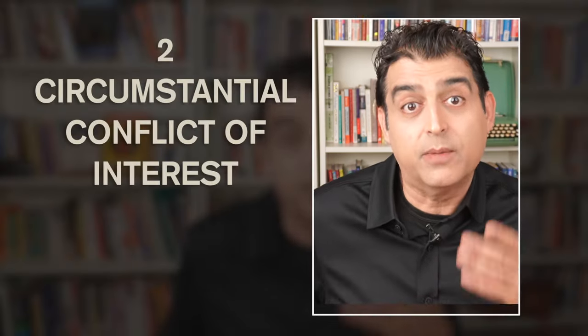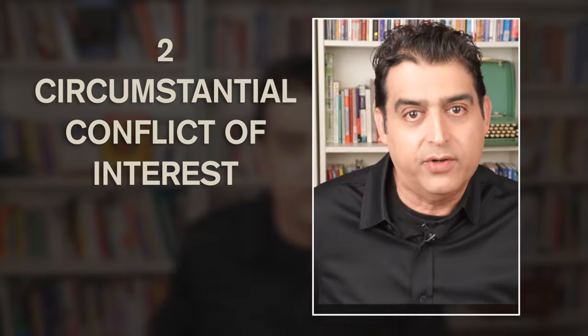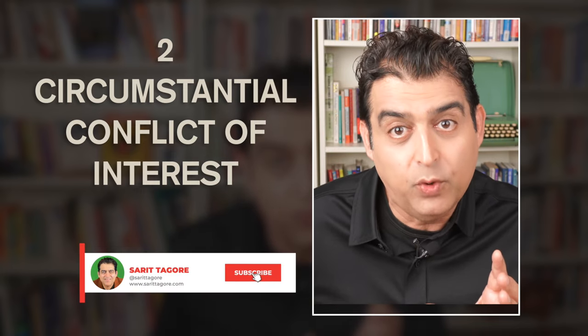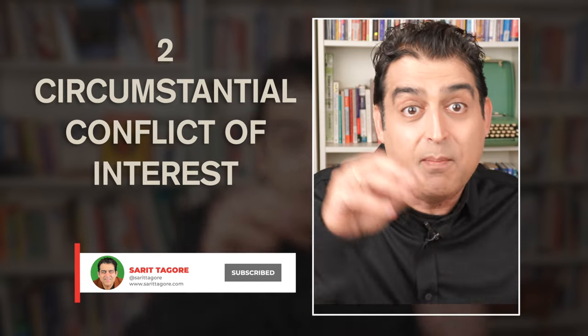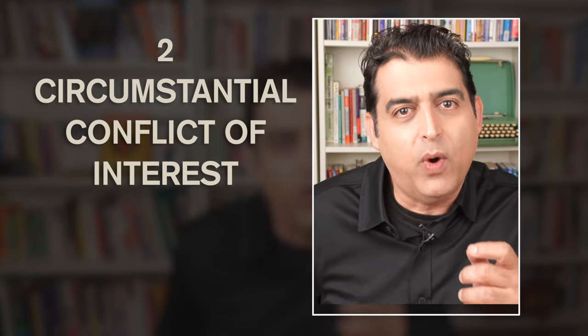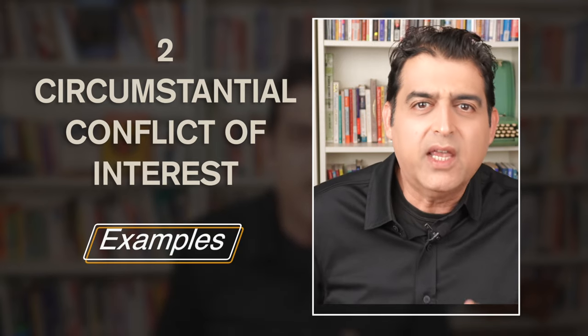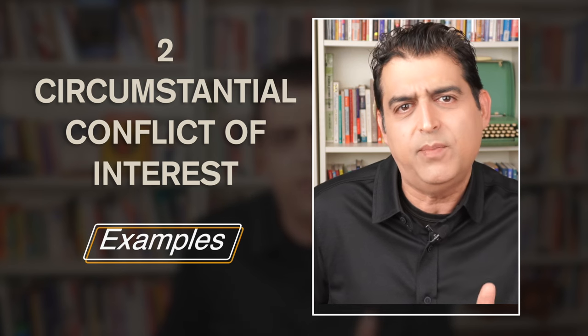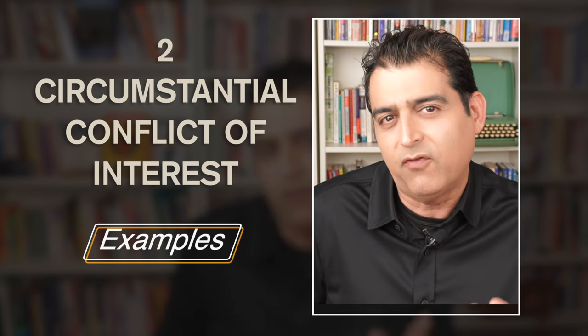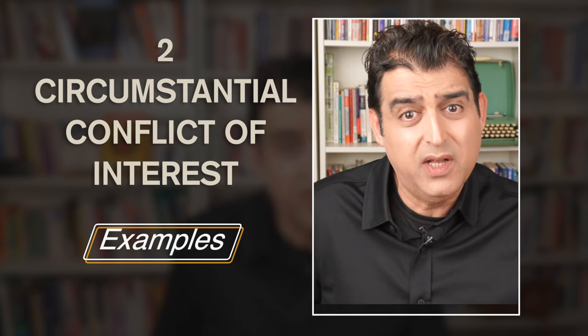The second type is circumstantial, also known as a conflict of interest. This focuses on the opponent's vested interest or potential conflict of interest. The aim is not to disprove the argument's validity but to subject the person making it to additional scrutiny. For example: 'Given your involvement in the construction industry, it seems you have a vested interest in advocating for affordable housing,' or 'You suggest that children opt for digital books, which aligns with your profession as a digital illustrator.'